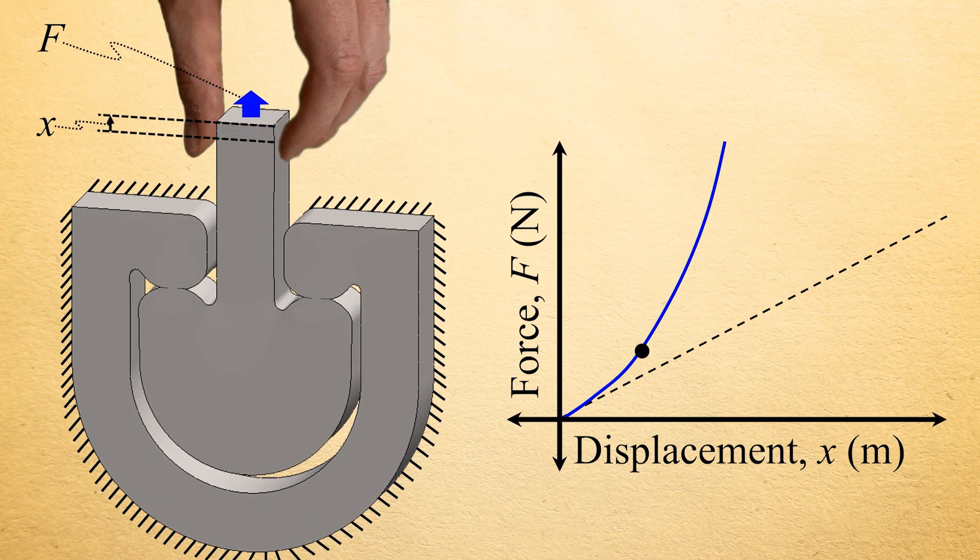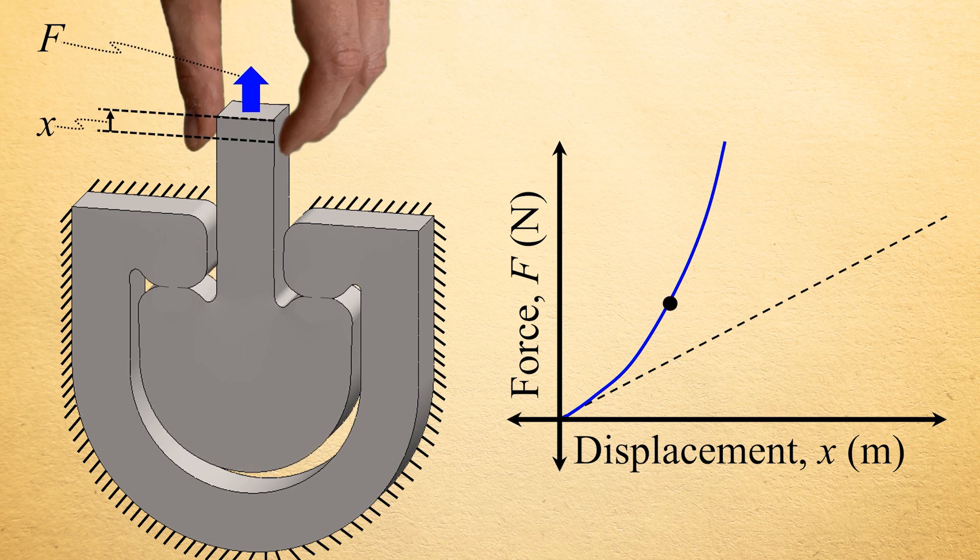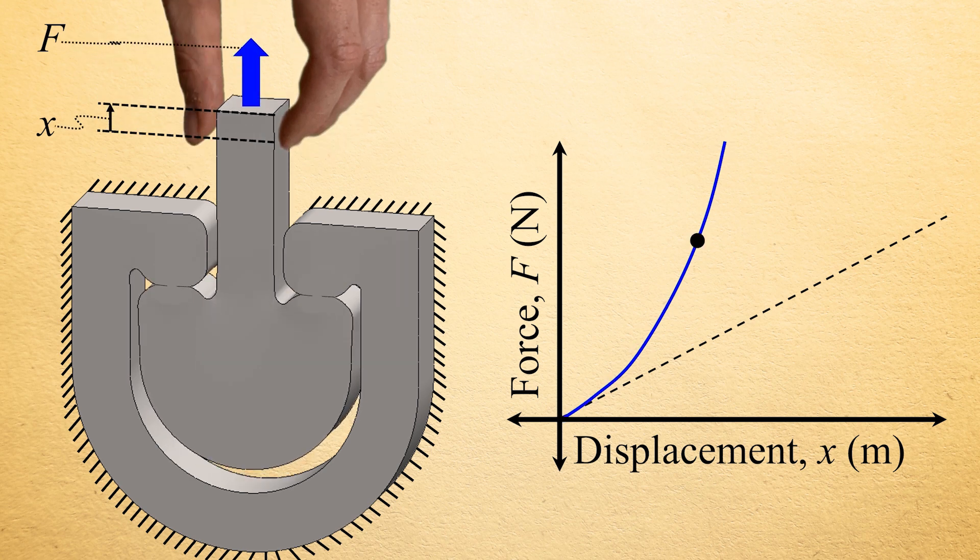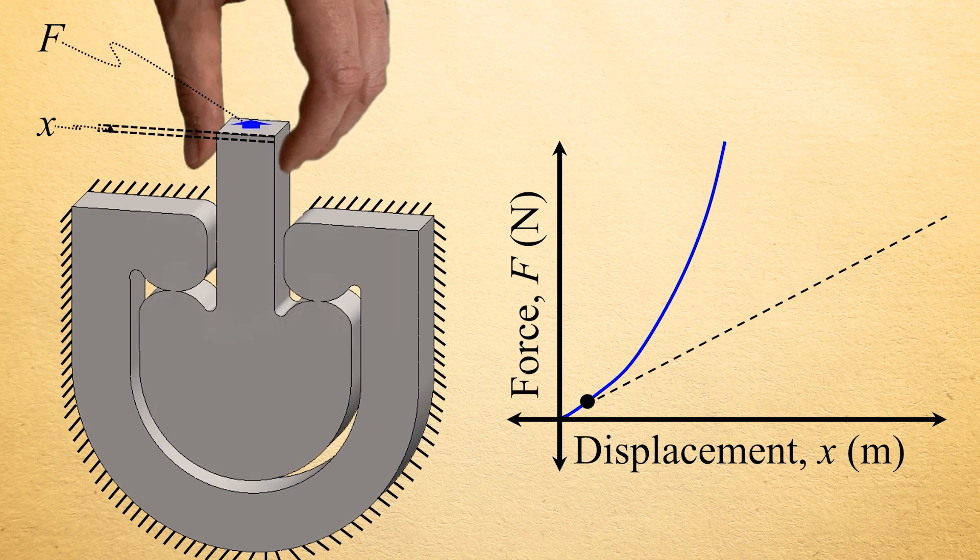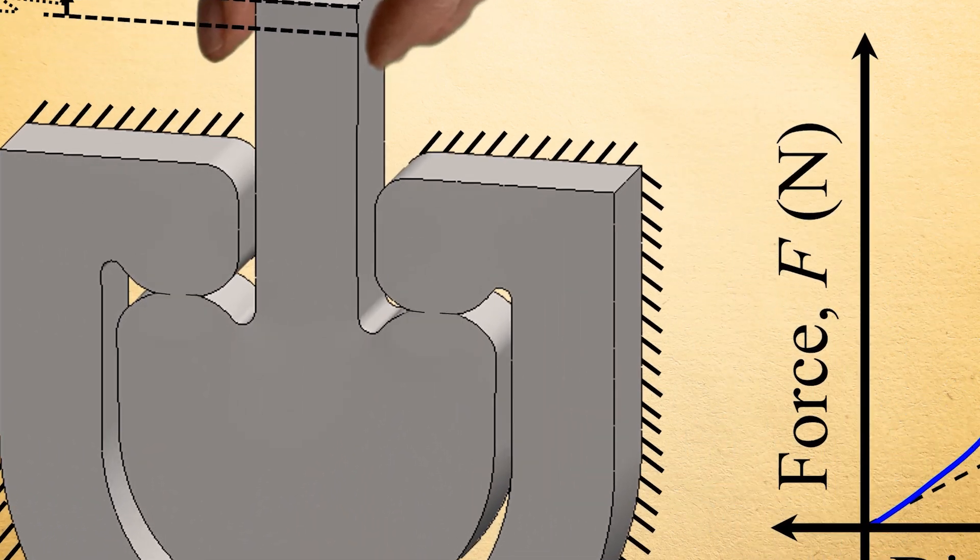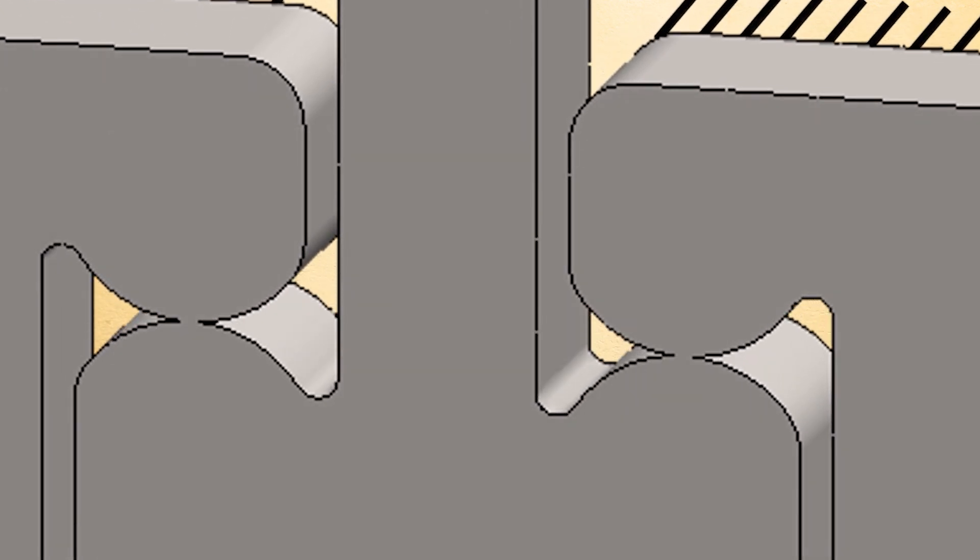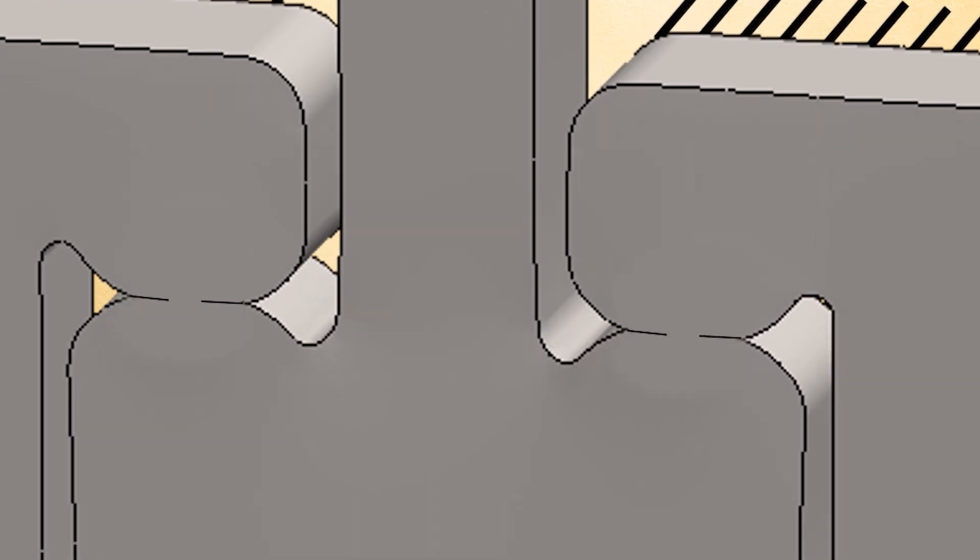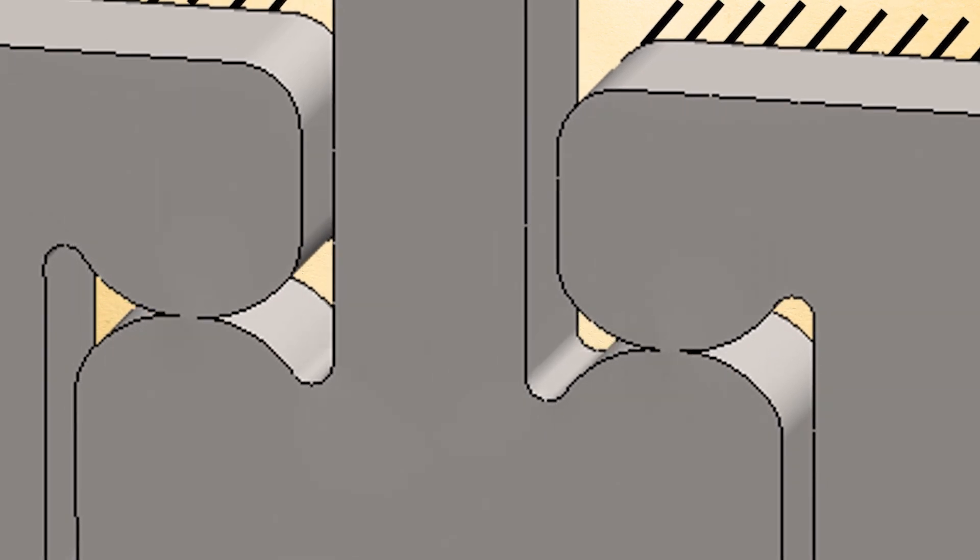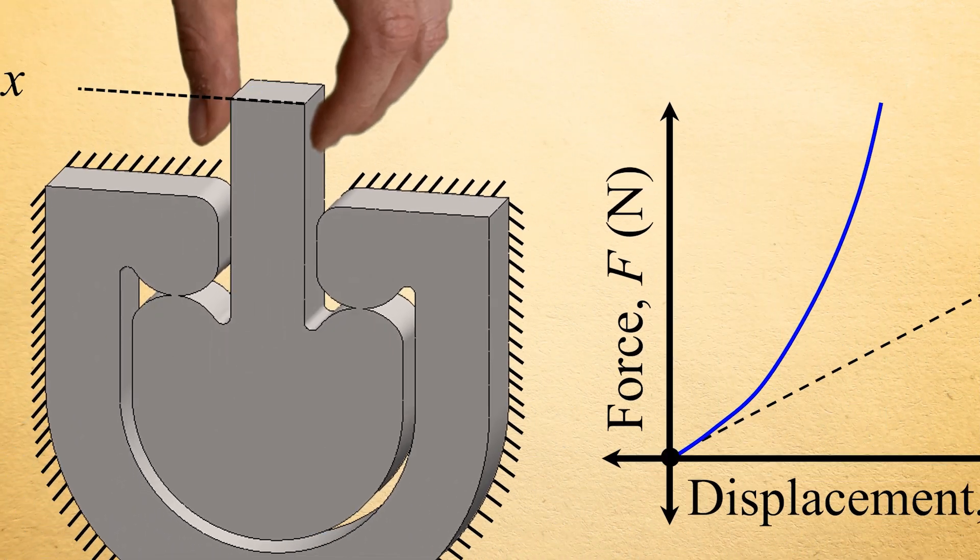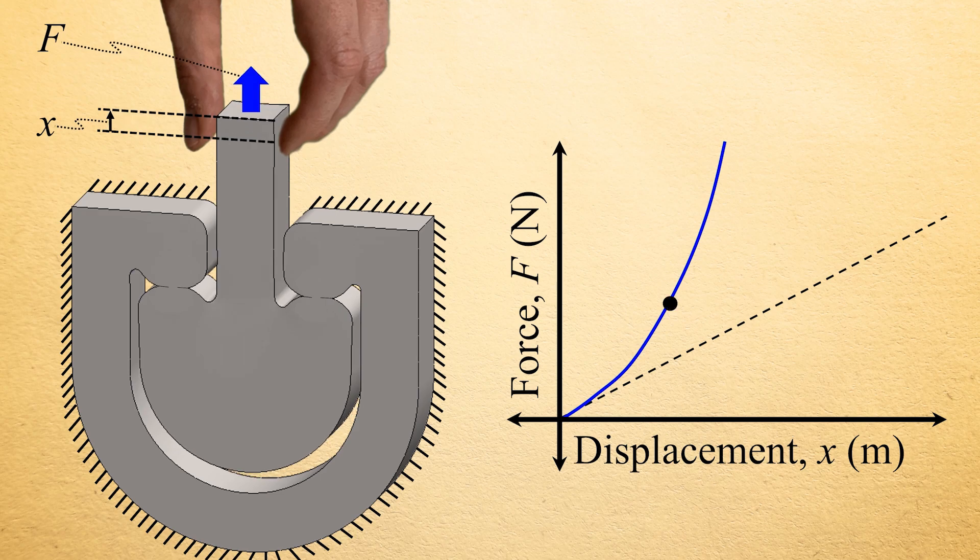Another non-linear spring design that achieves immediate and significant strain stiffening behavior but only when it is loaded in tension is shown here. Note that as the spring is pulled its two pairs of opposing cylinders are gradually flattened together, which increases the size of their areas of contact and thus rapidly increases the spring stiffness in a non-linear fashion.